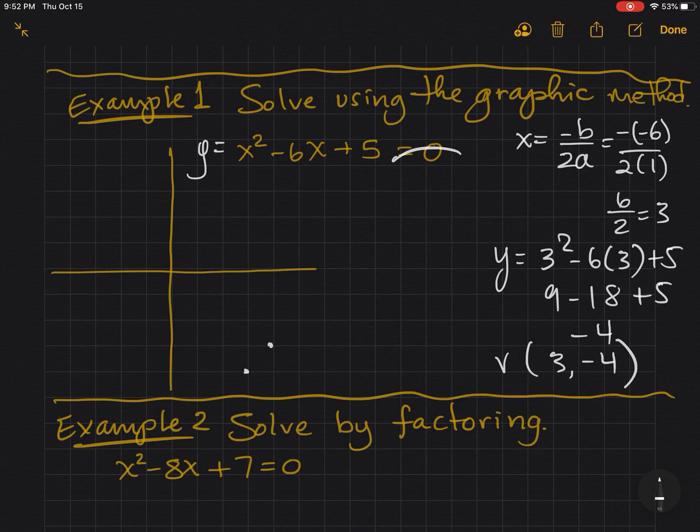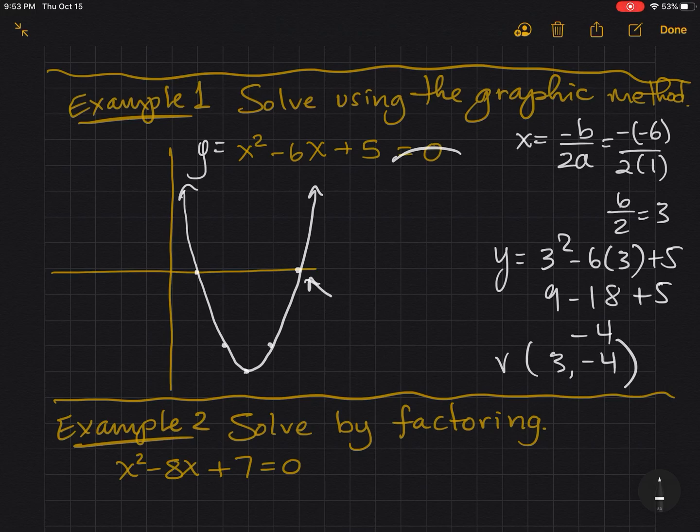And so 1 squared is 1 over 2 goes up 4. And already, I can see my x intercepts. And that's what we're looking for. The intercepts are the solutions. So we intersect at 1. We intersect at 5. So now we can say x equals 1 or x equals 5.